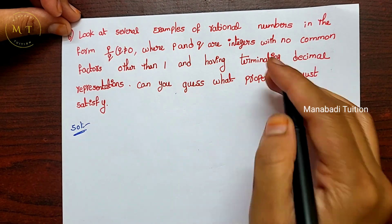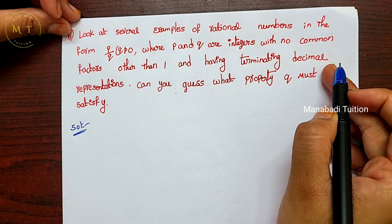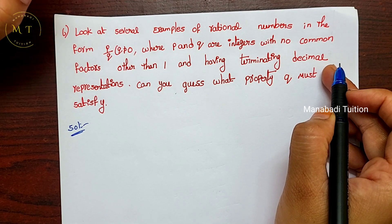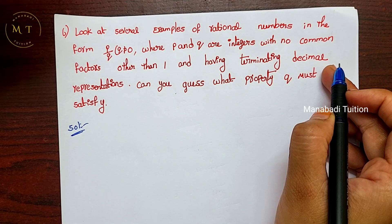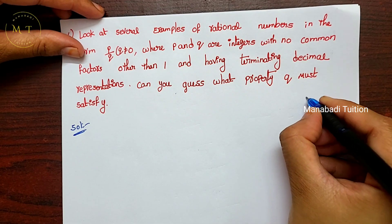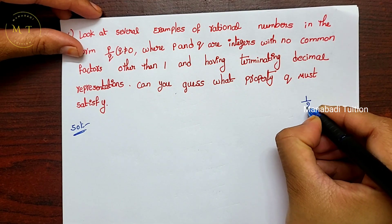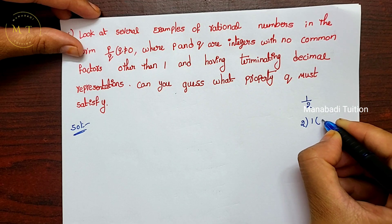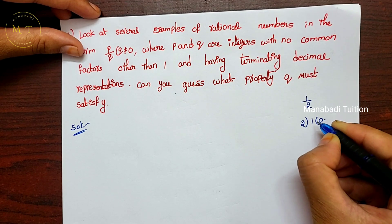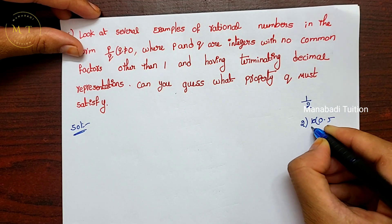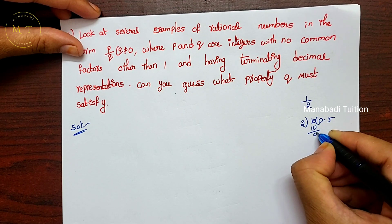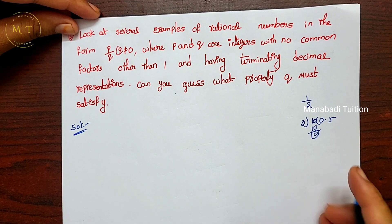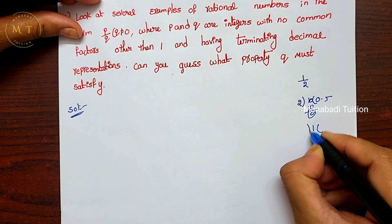First, let's look at terminating decimals. A terminating decimal means when you divide two numbers the remainder becomes 0. For example, take 1 by 2: divide 1 by 2, you get 0.5, and the remainder is 0. So we call these terminating decimals.